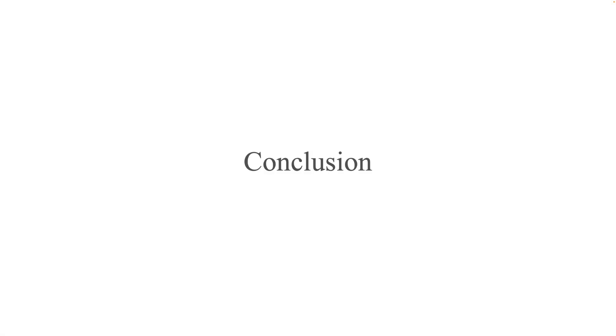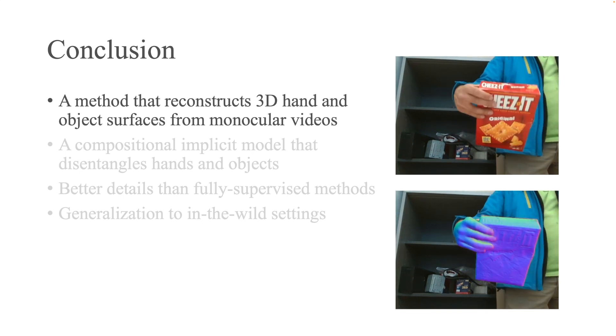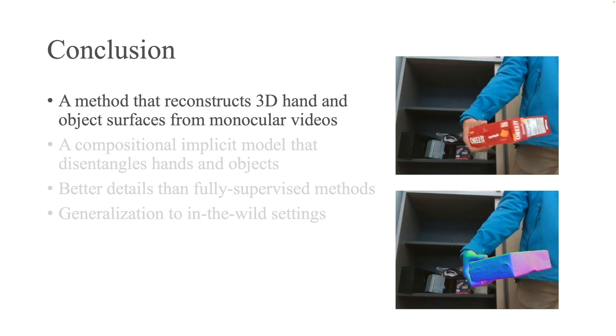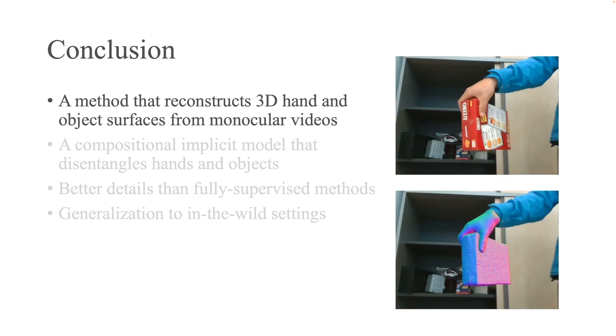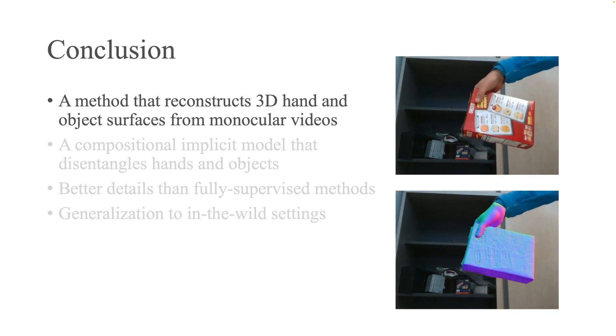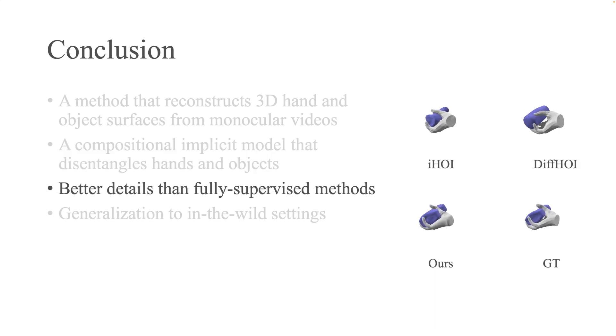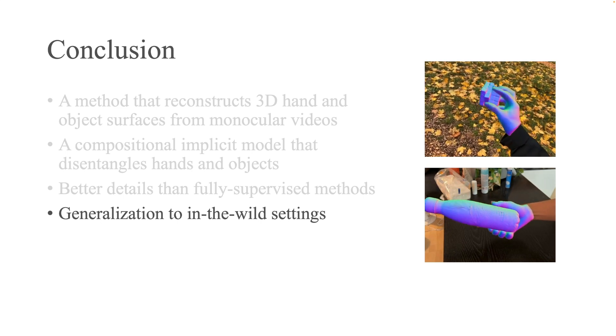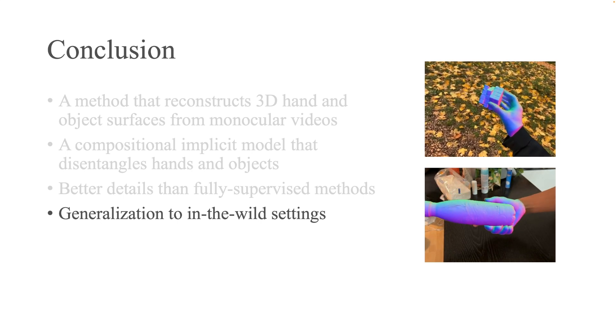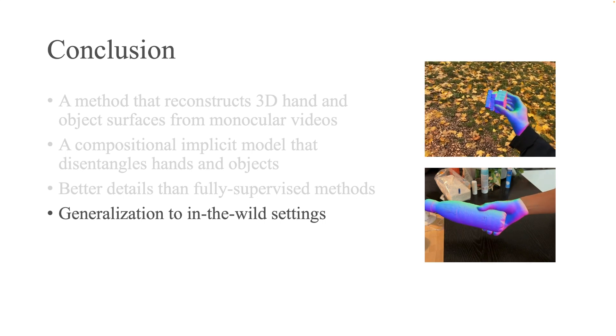To summarize, we present HOLD, a novel method that reconstructs 3D hands and objects from monocular videos with greater accuracy and realism than prior work. We introduce HoldNet, a compositional implicit model that disentangles the hand and object based on image observations. While our method does not rely on any 3D hand object dataset to train, we reconstruct significantly better details than fully supervised methods. Our method can also generalize to challenging in the wild first-person and third-person videos under different background and lighting conditions.